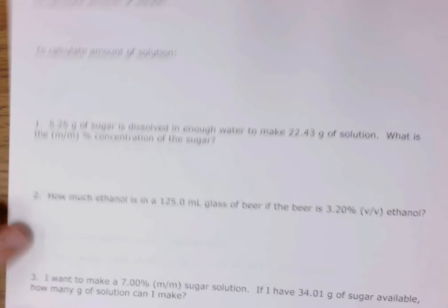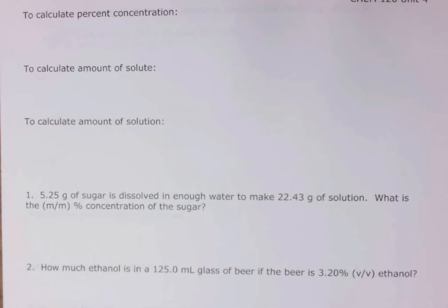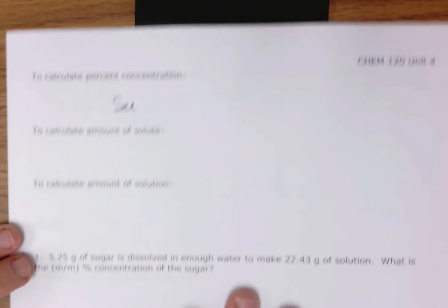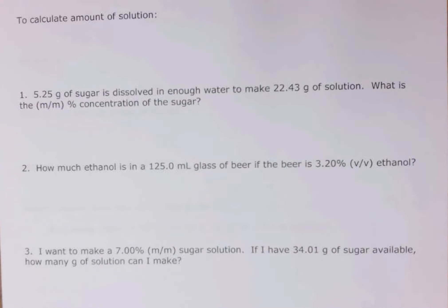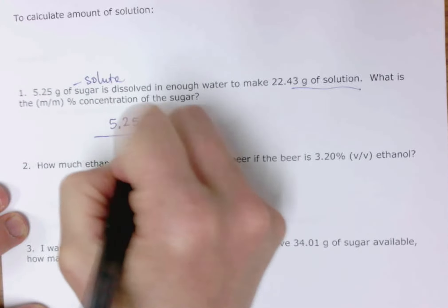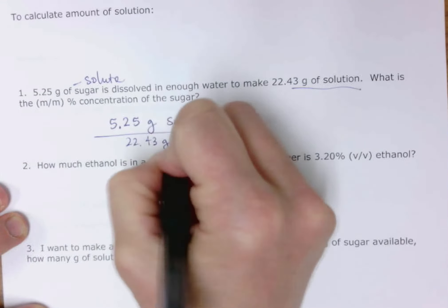To calculate percent concentration, let's look at example C1: 5.25 grams of sugar dissolved in enough water to make 22.43 grams of solution. What is the mass/mass percent concentration of the sugar? We have the solute and the solution given, so we take 5.25 grams of sugar divided by 22.43 grams of solution, multiplied by 100.